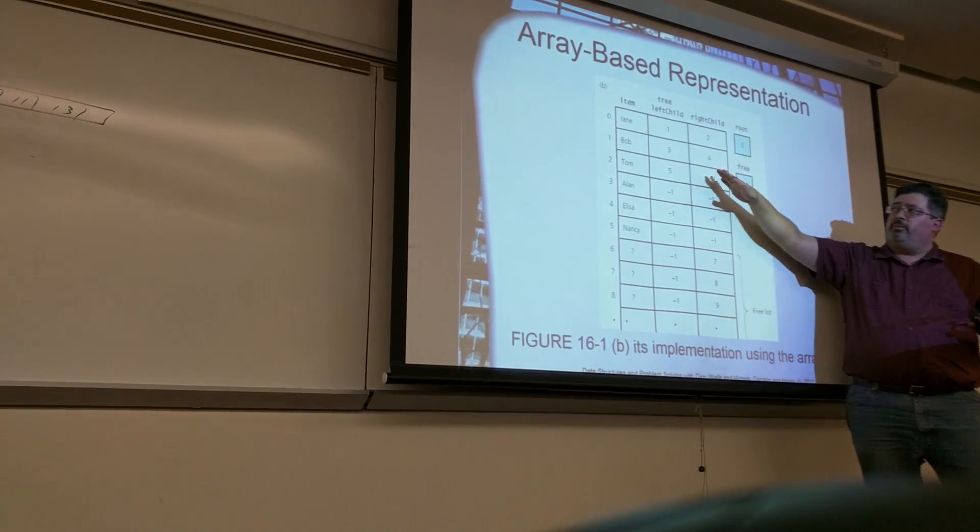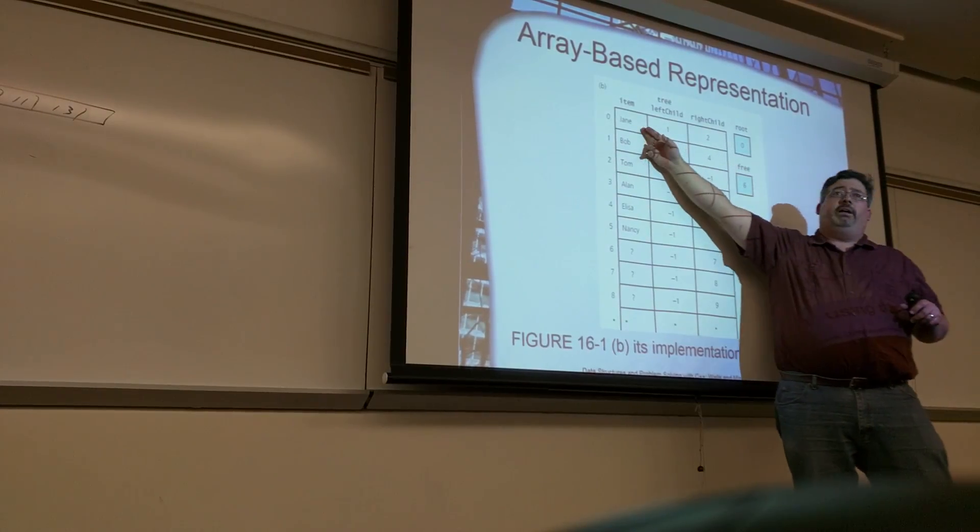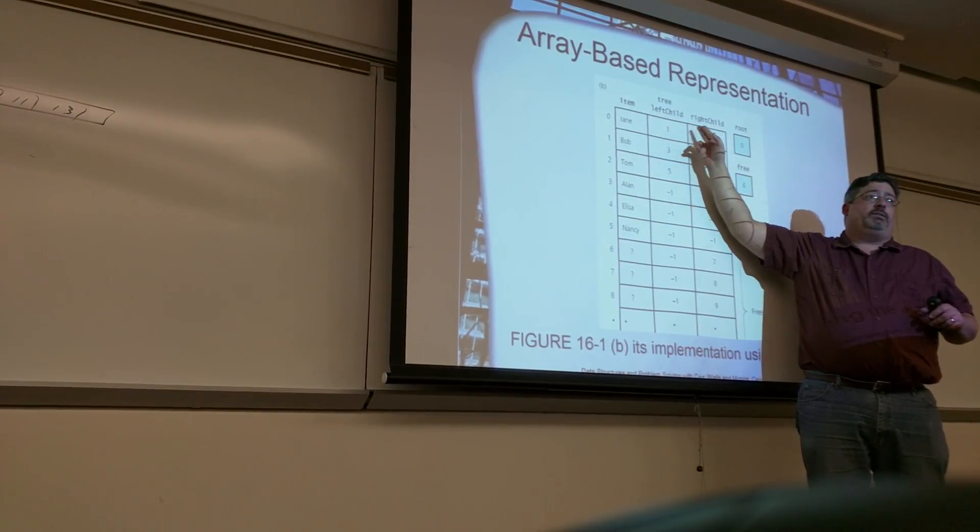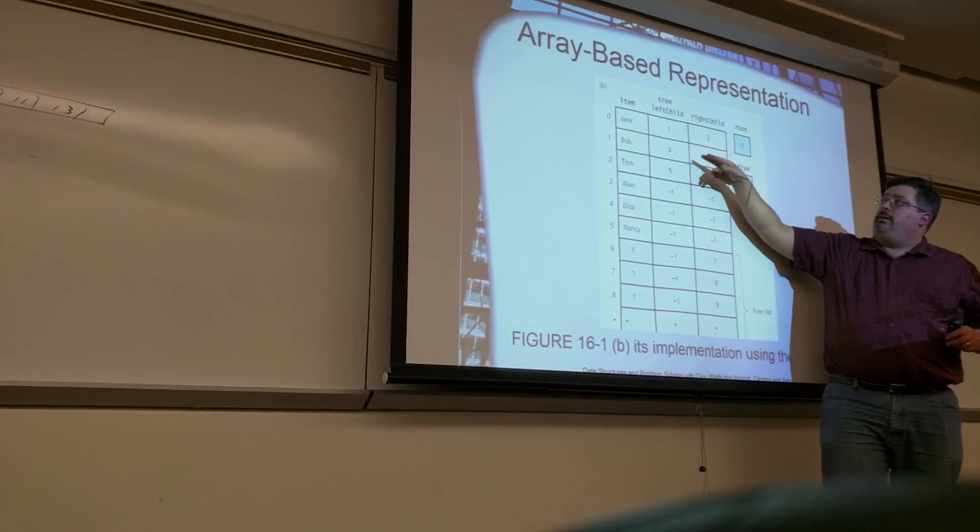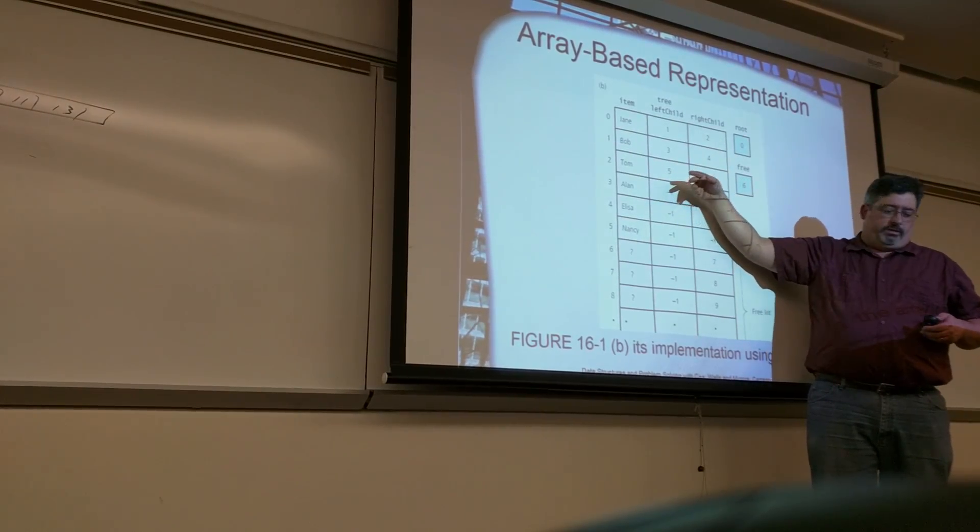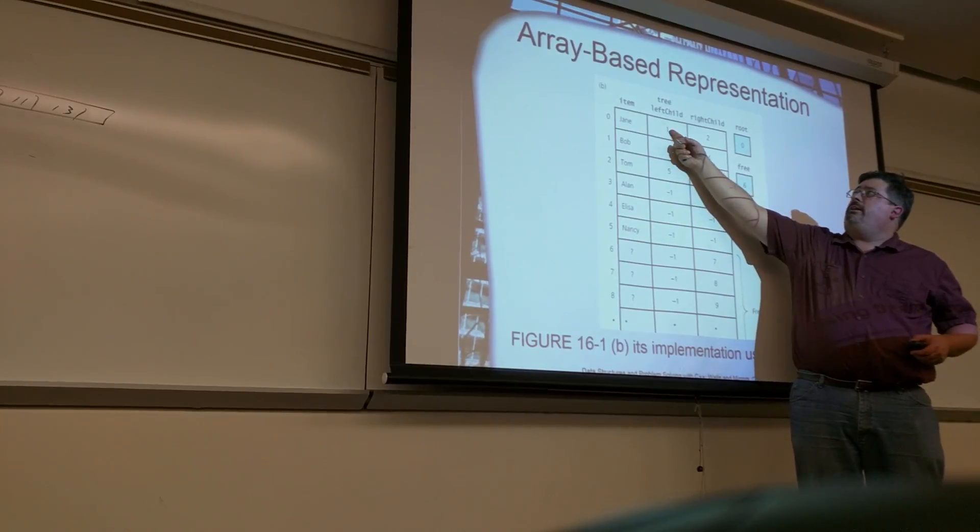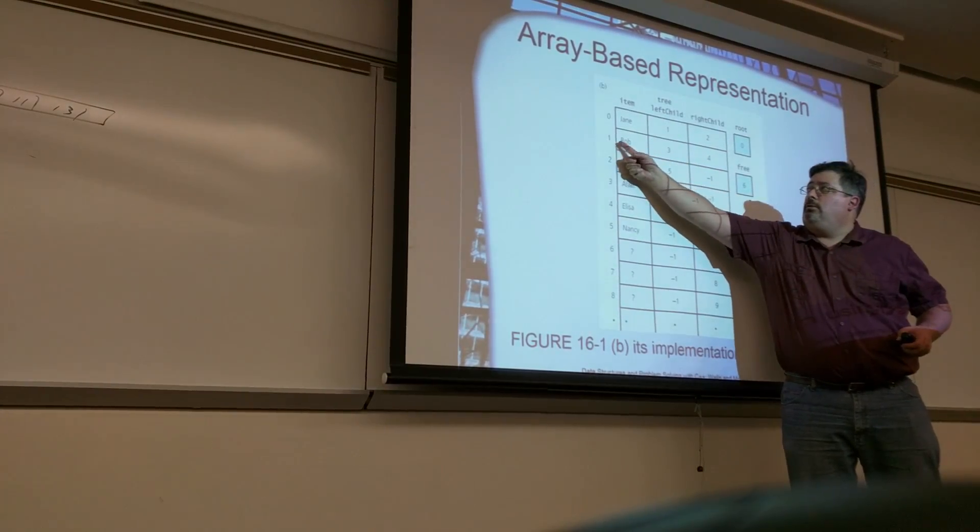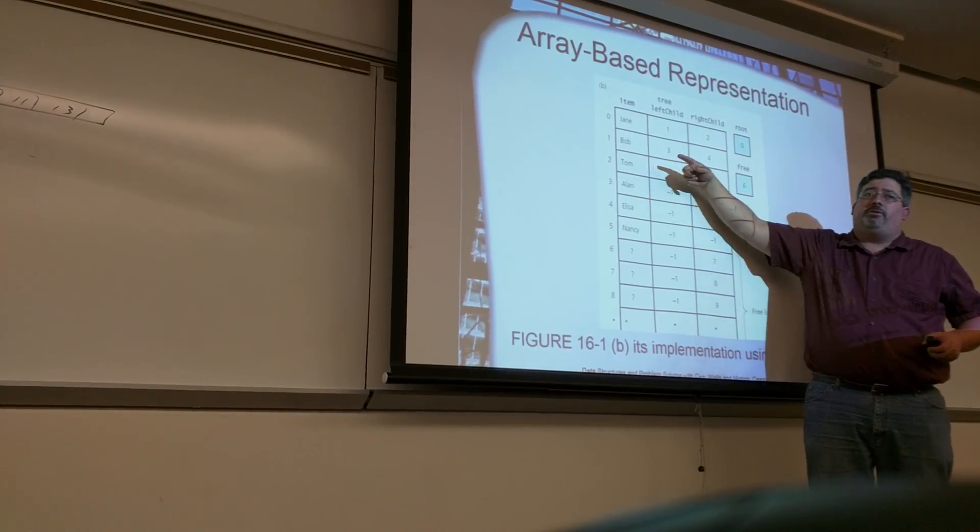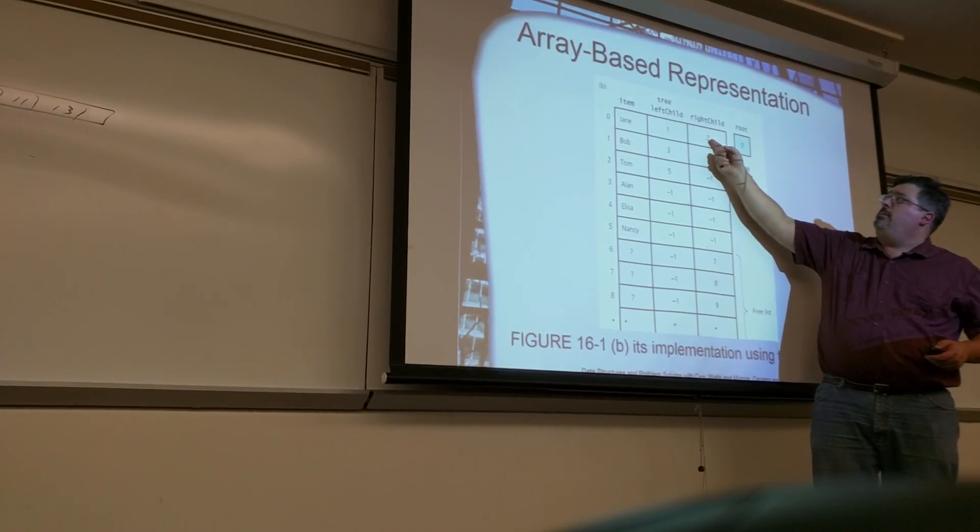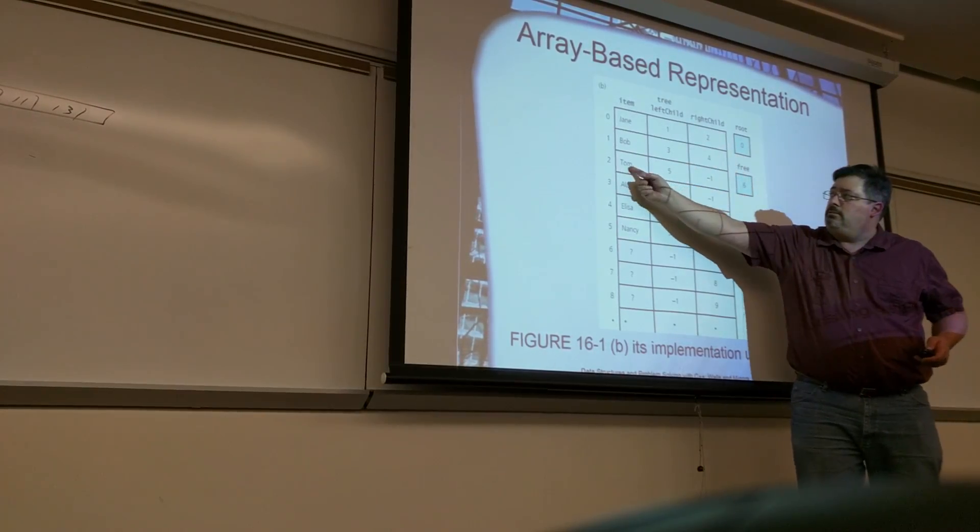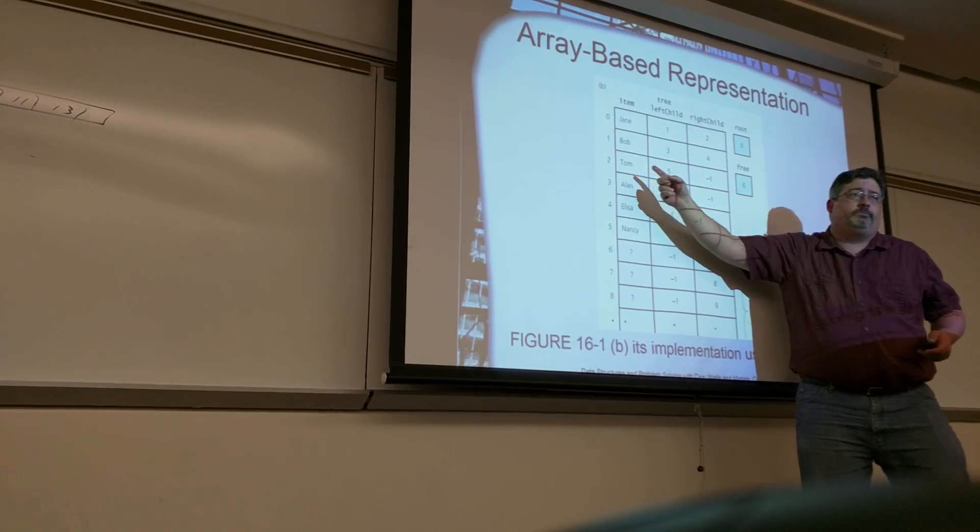It's easier to think of the structs. So I have my item, then my left child index, right child index, and so remember that on the left of Jane is Bob, so left child index of one, row one is Bob. And on the right side of Jane was Tom, so right child, Tom. Okay.